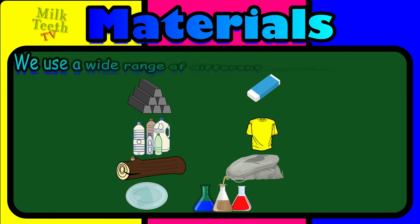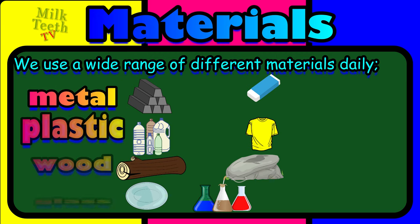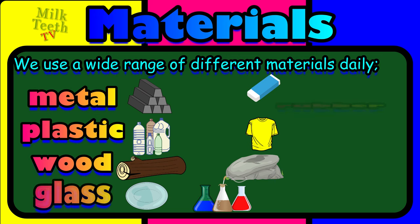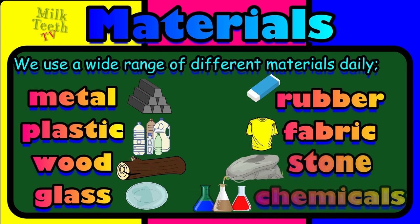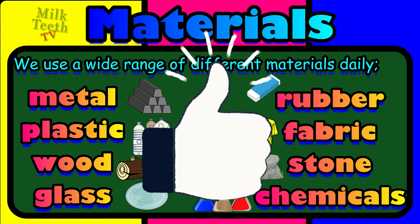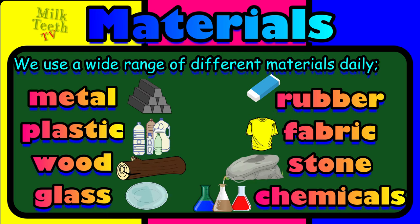Time for revision! We use a wide variety of different materials daily: metal, plastic, wood, glass, rubber, fabric, stone, and chemicals — all are different kinds of materials. Friends, if you liked this video, don't forget to give it a thumbs up and subscribe to this channel for more such videos. Thank you so much for watching — bye bye!